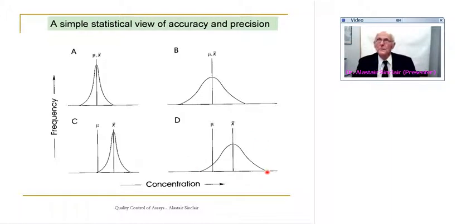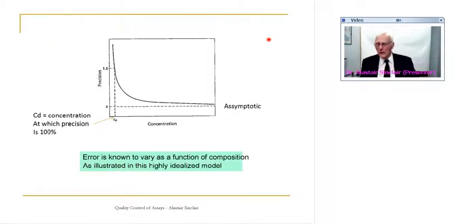The other generality that we need to be aware of is that error is a function of concentration. I have tried to emphasize that earlier on in my reference to the analysis of different elements in a platinum standard. If you recall, in that particular case palladium was very abundant in the standard and had relatively low precision.